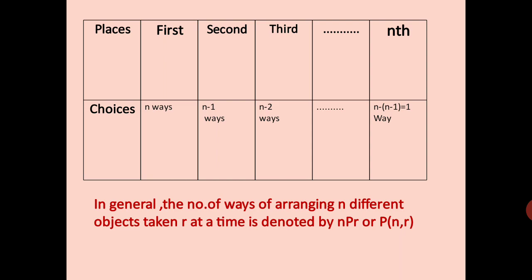In the general case, n different objects taken r at a time — the number of ways of arranging n different objects taken r at a time is denoted by nPr.